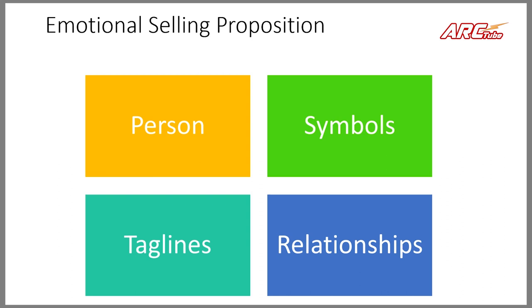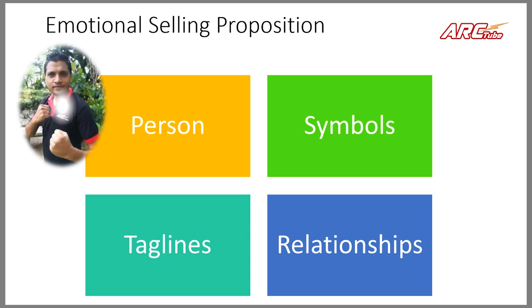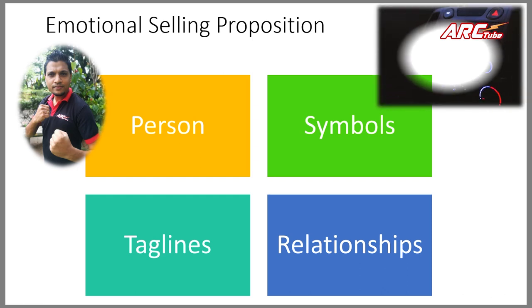What are the questions you should ask about your organization to know your ESPs — emotional selling propositions? First: what if your brand was a person? If Active were a person, it could be a trusted partner for digital knowledge sharing. The second question: what are the emotions communicated by your symbols or taglines?